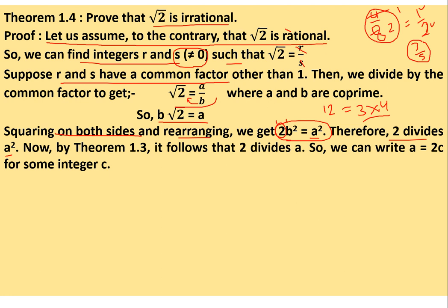Now if 2 divides a², then from the theorem we proved earlier — if a prime divides a², it also divides a — so 2 divides a as well. And if 2 divides a, we can write a = 2c for some integer c. Just as if 3 divides 12, we can write 12 = 3 × 4. Similarly, if 2 divides a, then a = 2c for some integer c.